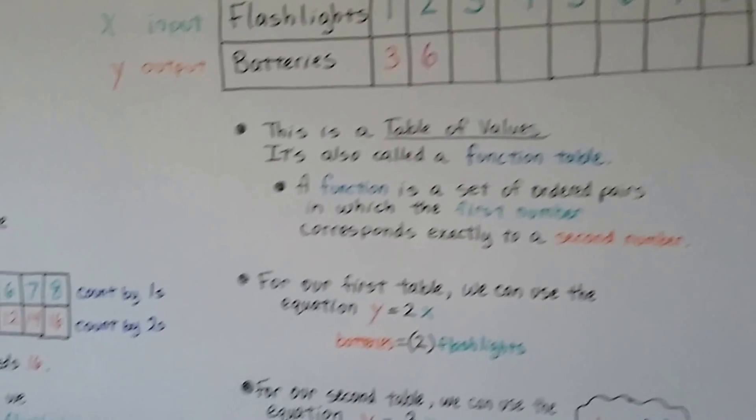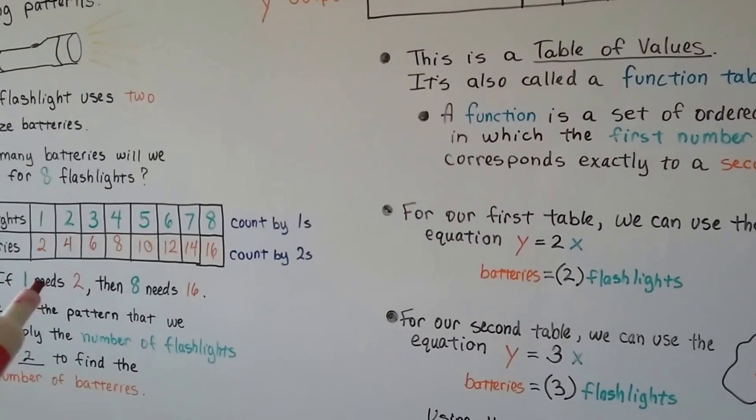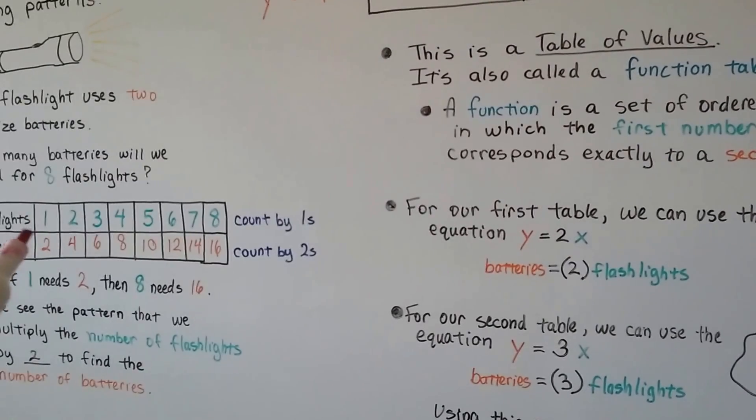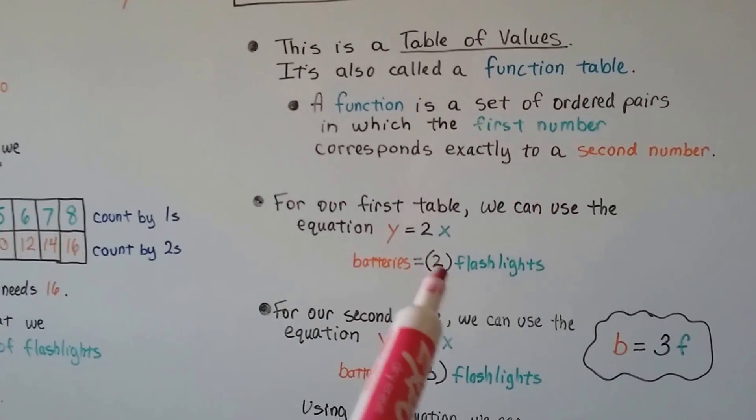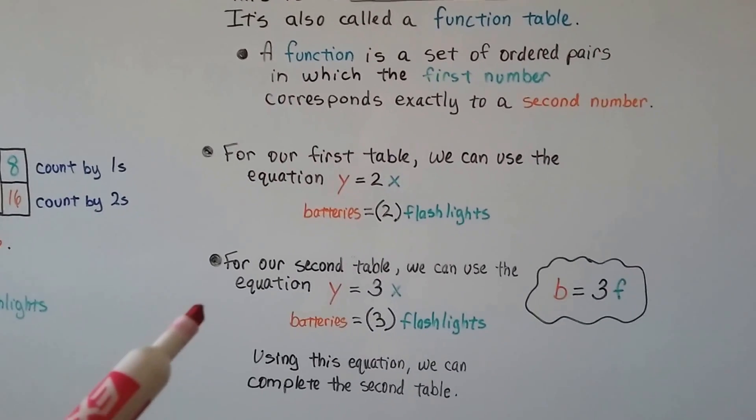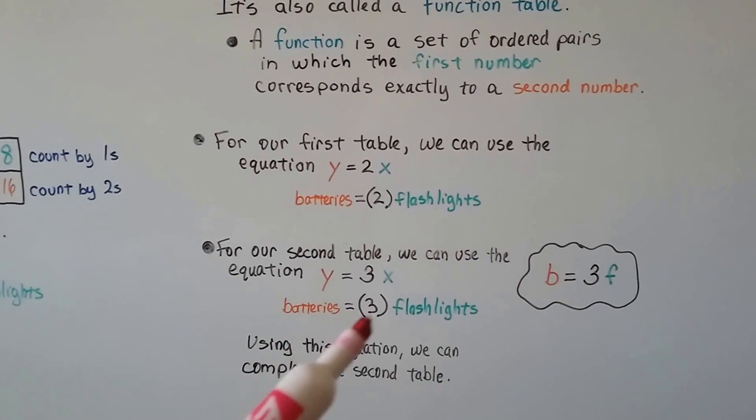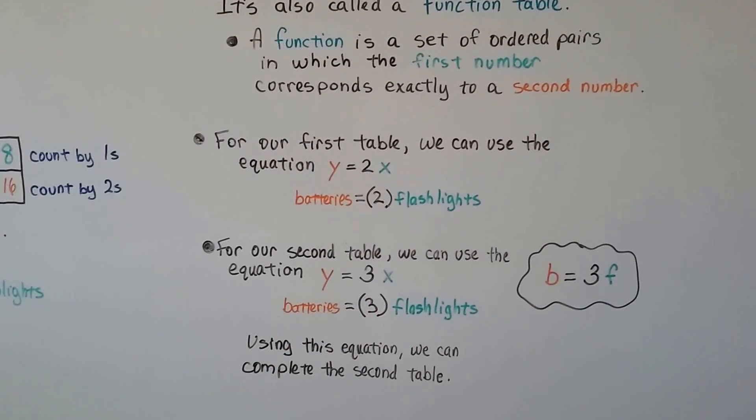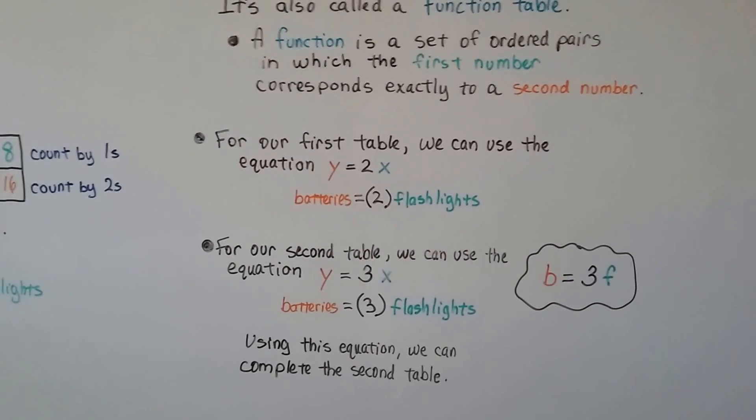For our first table, we can use the equation Y, batteries, equals two times X, two times the flashlight. That's the batteries equals two times whatever number of flashlights we have. Well, for our second table, we can use the equation Y equals three X. The batteries are going to equal three times the flashlights. We can even say B for batteries and F for flashlights if we want.